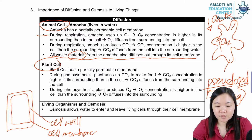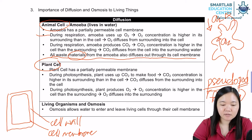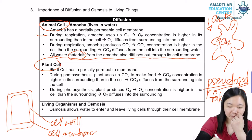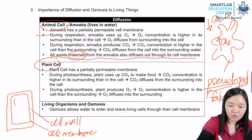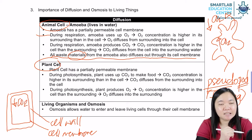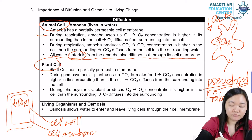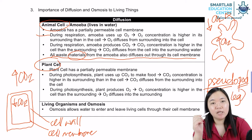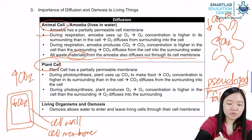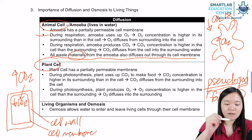During photosynthesis, the plant uses up carbon dioxide, so this is the opposite situation. There will be a lower concentration of carbon dioxide inside the plant during a bright day because of photosynthesis, as opposed to a higher concentration of carbon dioxide in the surrounding. So this allows carbon dioxide to diffuse into the cell.